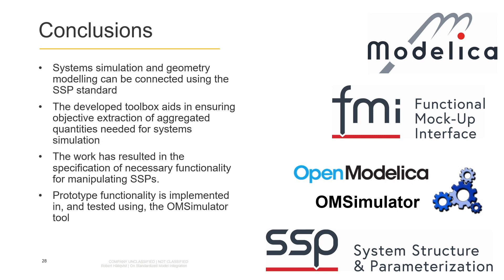In this work, we can draw the following main conclusions. System simulation and geometry modeling can be connected using the SSP standard. Such interoperability can be seen as an enabler for industry collaboration between partners using different tool suites. The use of open standards for achieving interoperability is also a very important enabler to avoid tool vendor lock-in effects. The developed CATIA toolbox aids in ensuring objective extraction of aggregated quantities needed for system simulation, thus increasing the credibility of the models and simulation results. Additionally, the work has resulted in the specification of necessary functionality for manipulating SSPs, implemented and tested using the OM simulator tool. The authors would like to express their gratitude to all the EMBRACE project partners, in particular Leonard Ochl and Arunk Marpal for their work implementing the SSP manipulation functionality in the OM simulator tool. Thank you.